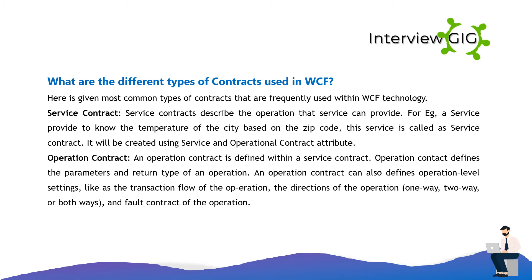The most common types of contracts used in WCF are: Service Contract — describes the operations a service can provide, for example a service that provides the temperature of a city based on a zip code. It is created using the ServiceContract and OperationContract attributes. Operation Contract is defined within a service contract and defines the parameters and return type of an operation. It can also define operation-level settings like transaction flow, the direction of the operation (one-way, two-way, or both ways), and fault contracts.